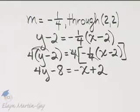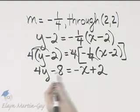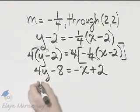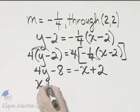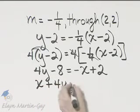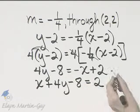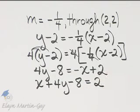Now let's write it in standard form. I will add x to both sides. If I add x to the left side, I'll have x plus 4y minus 8 is equal to 2, because adding x to this side, they subtract out.